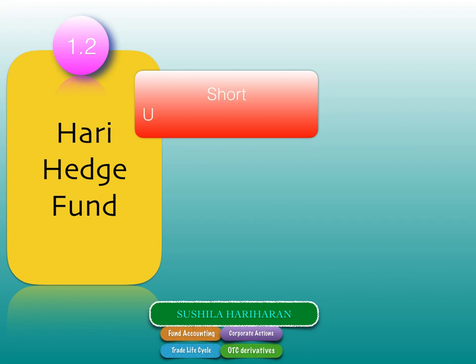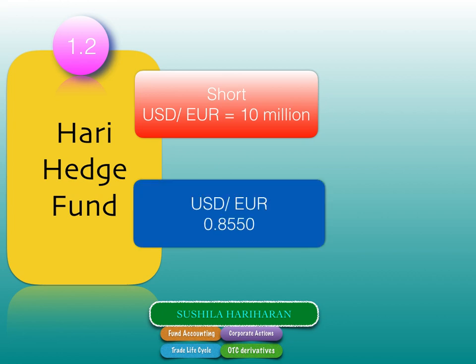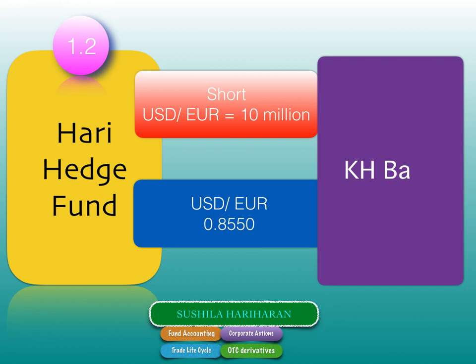Let's take an example. Hari Hedge Fund has taken a short position in USD/EUR of 10 million dollars at a rate of 0.8550 with KH Bank. We've already explained how to interpret base rate, quote rate, base currency, and quote currency in different markets. To recap: Hari Hedge Fund is short on USD and long on euro, and the counterparty to the trade is KH Bank.